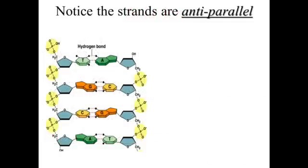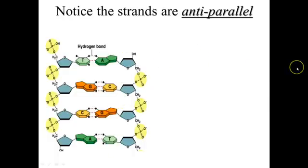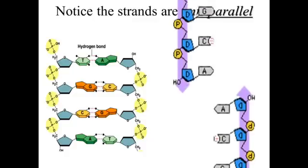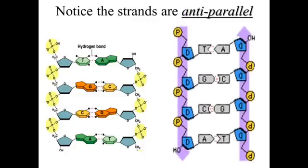Another important thing about the DNA molecule is that the strands are anti-parallel. The strands on one half of the double helix are going in one direction, while the strands on the other half are moving in the other direction. You could think of it as two halves of a two-lane road — one strand goes in one direction, the other strand is constructed in the other direction.